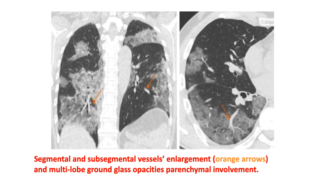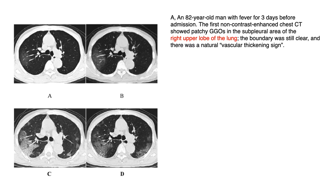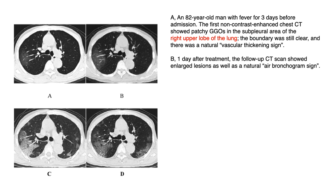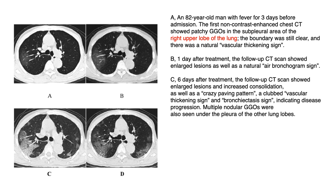Another atypical presentation: segmental and subsegmental vessel enlargement with multilobar ground glass opacities — mainly parenchymal involvement. As discussed, distribution should generally be peripheral, but here we see central parenchymal involvement, which is atypical. An 82-year-old man with fever for three days: initial CT showed very thin ground glass opacity in the subpleural area on the right chest. One day after follow-up CT showed enlarged lesions with air bronchogram sign — prominent bronchus within the ground glass opacities.